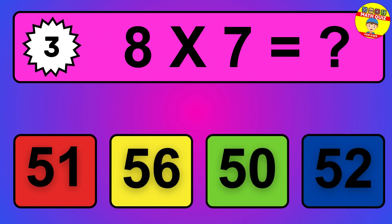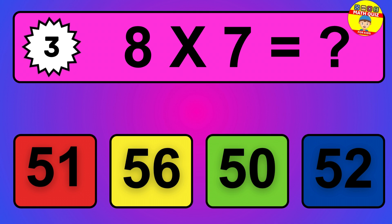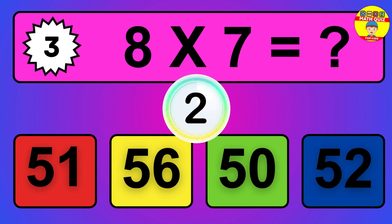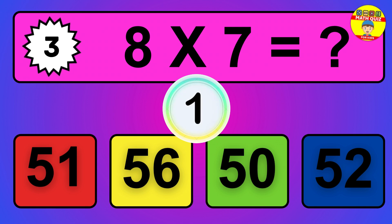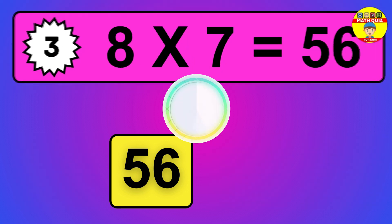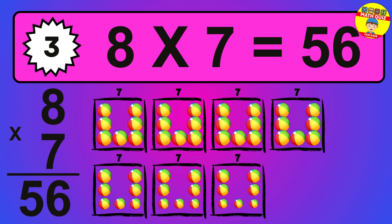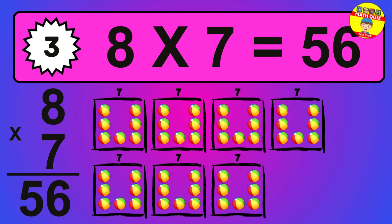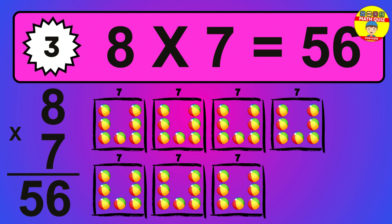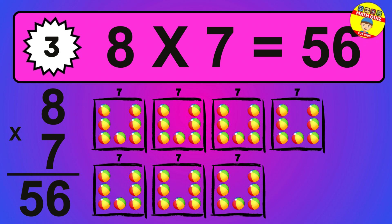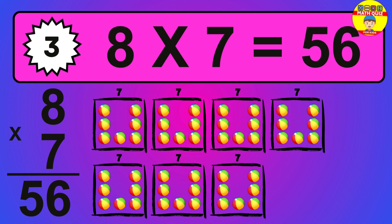Question 3. 8 times 7 equals what? So the answer is 8 times 7 is 56. To calculate, we have 8 groups with 7 balls each one. So how many balls do we have? 56 balls.